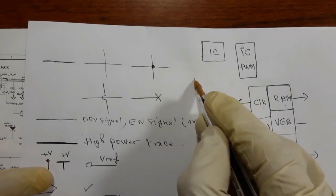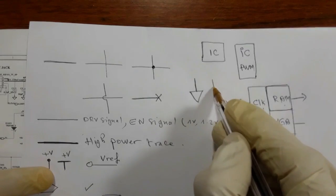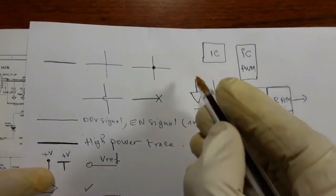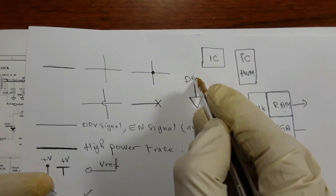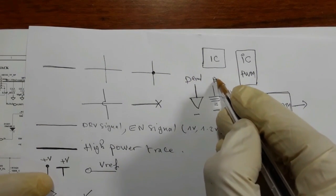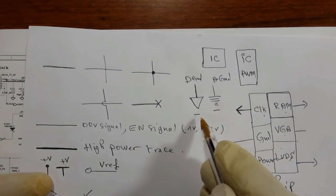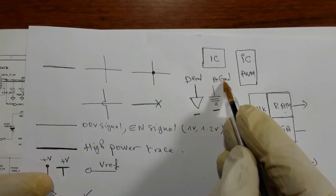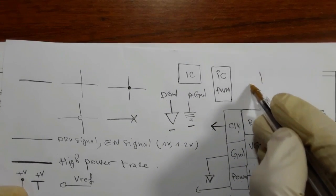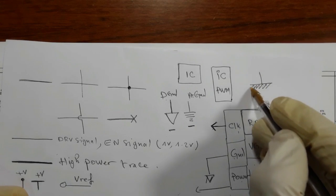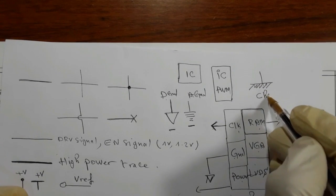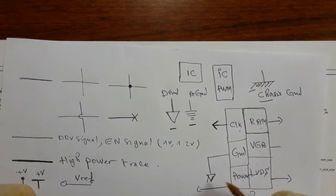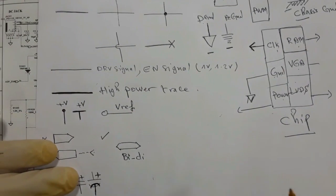We are going to see two kinds of ground in the motherboard. This is the digital ground and here we have the analog ground — this is the symbol for digital ground and this is the symbol for analog ground. And of course there is another symbol for the chassis ground, but you will not find this kind of ground in the motherboard.